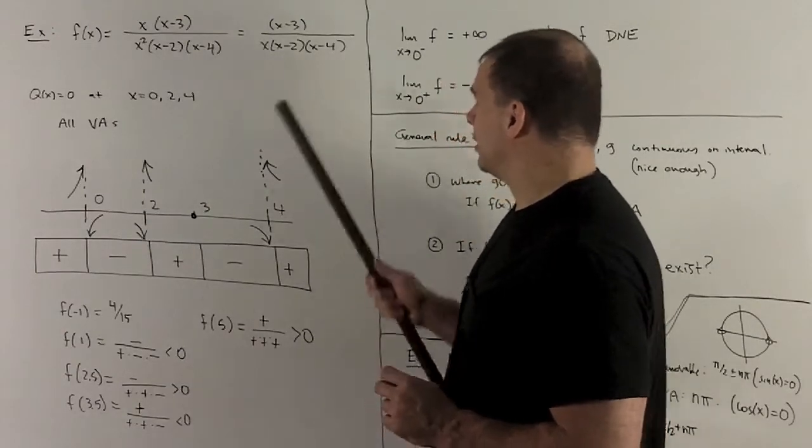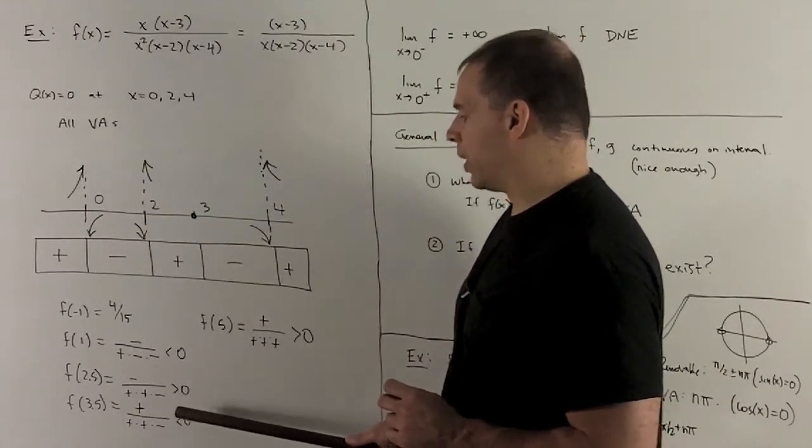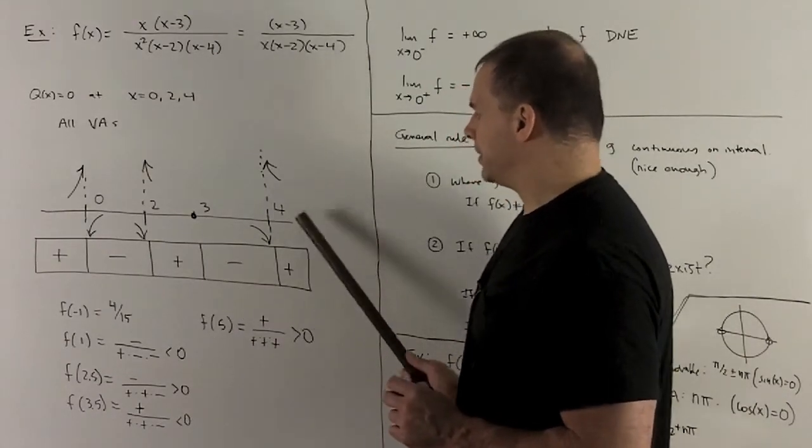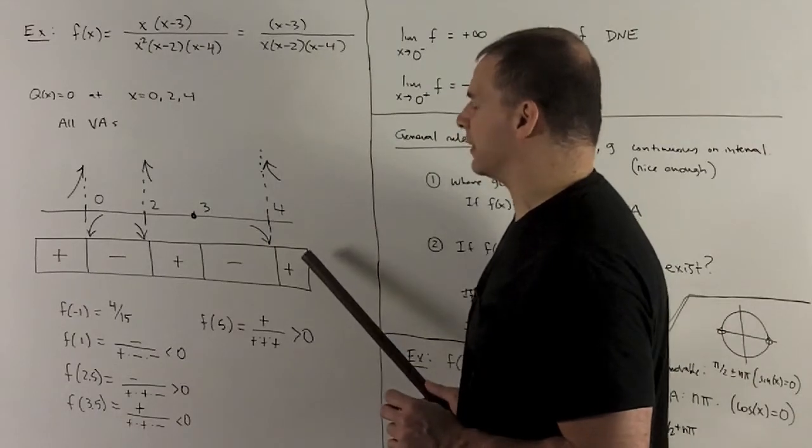3 1⁄2, same idea. Going to give me positive with one negative in the bottom, gives me a negative. And then if I put, say, 5 in to get this region, everything's positive, so we're positive here.